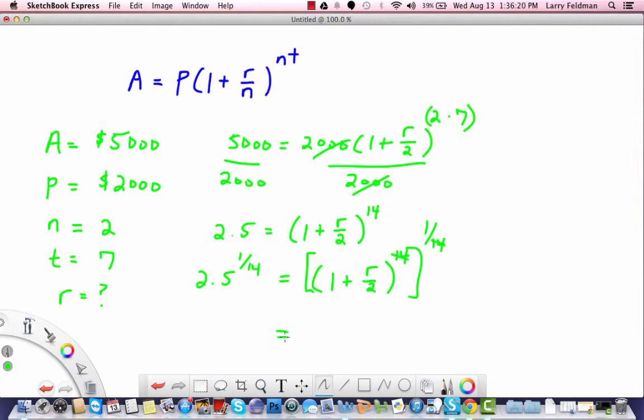So we get 2.5 to the 1/14th and using my calculator that is 1.068, and here we just have 1 plus R over 2. So now we subtract 1 so we get 0.068 equals R over 2. Multiplying both sides by 2 we get R equals 0.135, and converting to percentage form that is 13.5%.